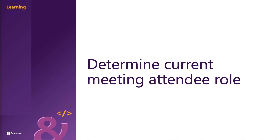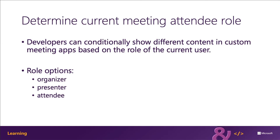Now let's talk about determining the current meeting attendees' role. Developers can conditionally show different content in a custom meeting app based on the role of the current user. Your app could show one experience and provide some capabilities to meeting organizers while other meeting attendees receive different experiences. We're going to do this in our demo in just a few minutes. We have three different options: organizer, presenter, and attendee.